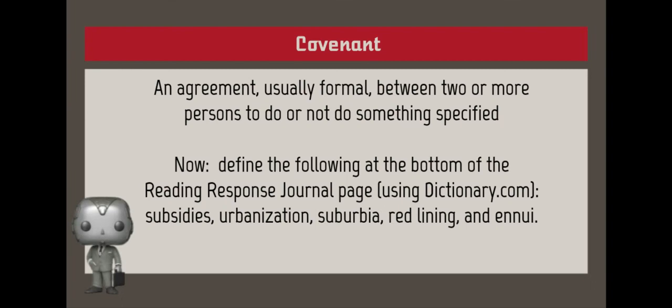Now we're going to look at some vocabulary that will accompany your readings. The first word we're going to look at is covenant. Covenant is a noun meaning an agreement, usually formal, between two or more persons to do or not do something specified.